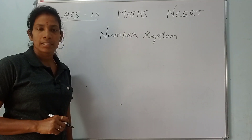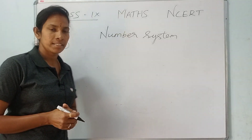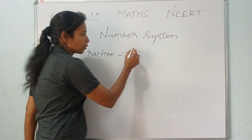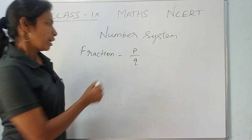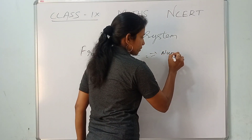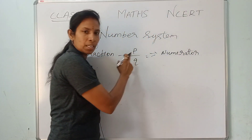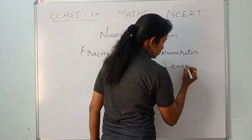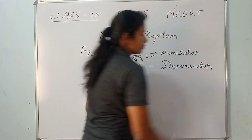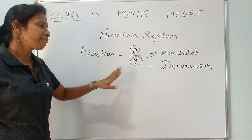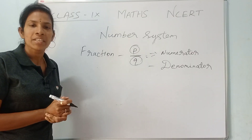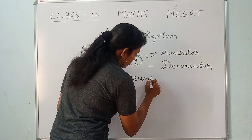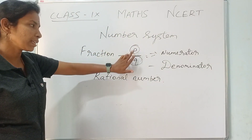The next type in the number system is fractions, also called Rational Numbers. Rational numbers follow the P by Q formula, where P is the numerator and Q is the denominator. The fraction number is a rational number. Rational number is represented as P/Q.